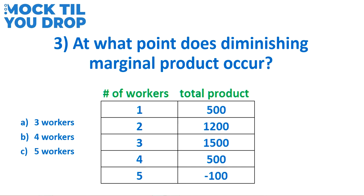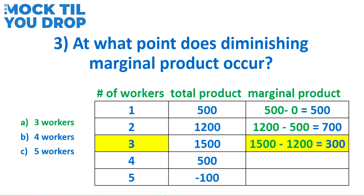By now you might have guessed it's going to be answer choice A. Marginal product tells us how much more output is being produced with each additional input — in this case, how many more baskets can be produced with the addition of another worker. With one worker, 500 baskets are made. When you add a second worker you produce 700 more baskets, determined by taking the total product of two workers (1200 baskets) and subtracting the total product of one worker (500 baskets): 1200 minus 500 equals 700 baskets. When we hire the third worker, total product increases from 1200 to 1500, which is only 300 additional baskets. Because 300 additional baskets with the third worker is less than 700 additional baskets with the second worker, the third worker is the point where marginal product starts to diminish.